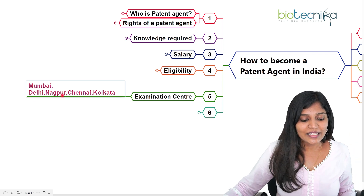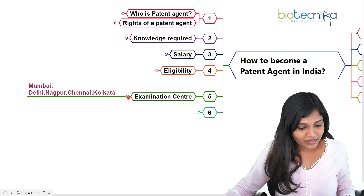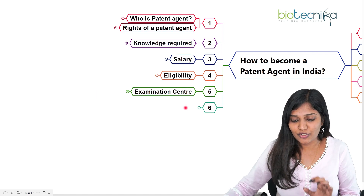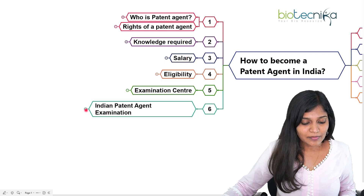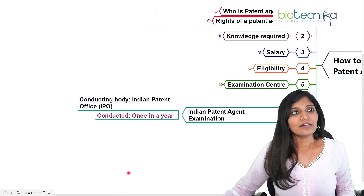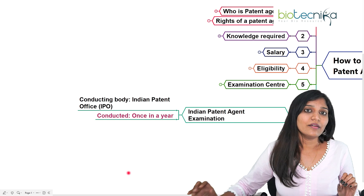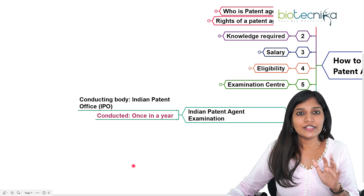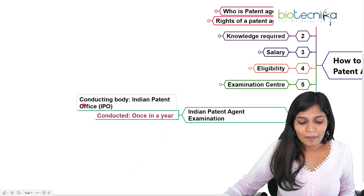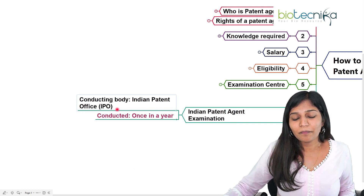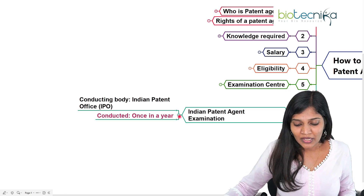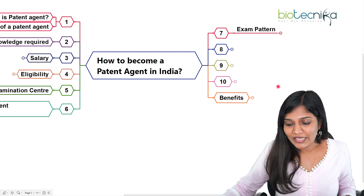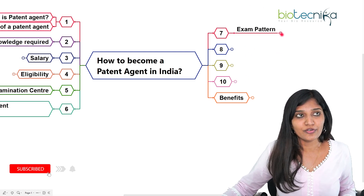The exam centers are very limited: Mumbai, Delhi, Nagpur, Chennai, and Kolkata — five centers in total. It is a written examination. The exam is conducted once a year, usually tentatively in the month of May. The conducting body is the Indian Patent Office, Government of India.